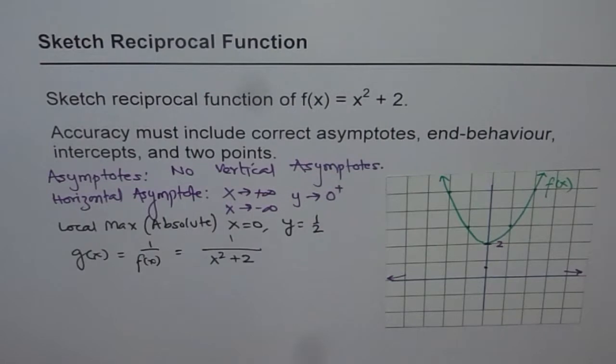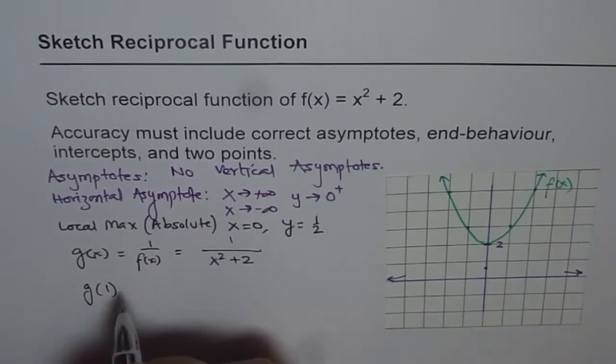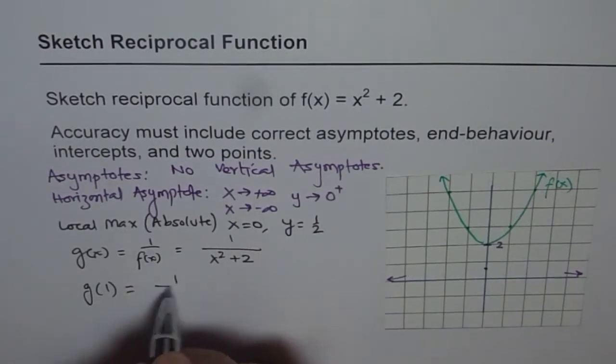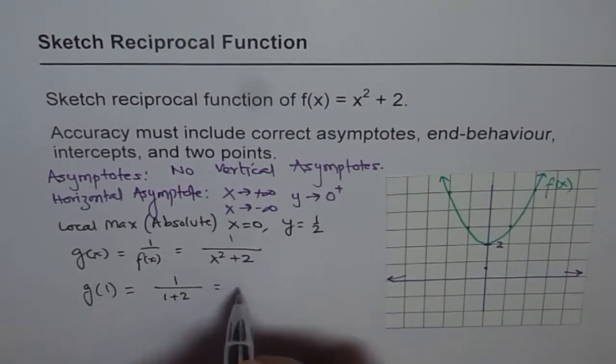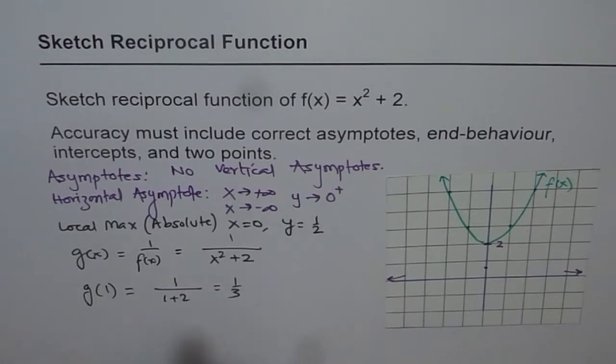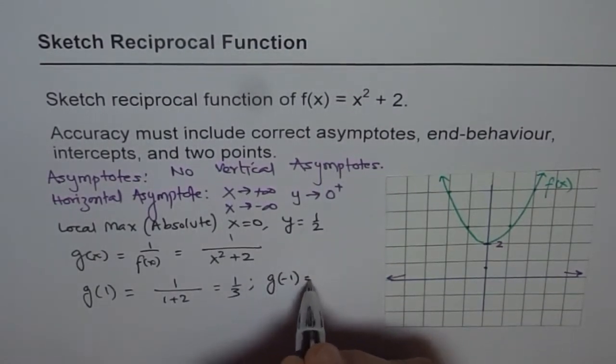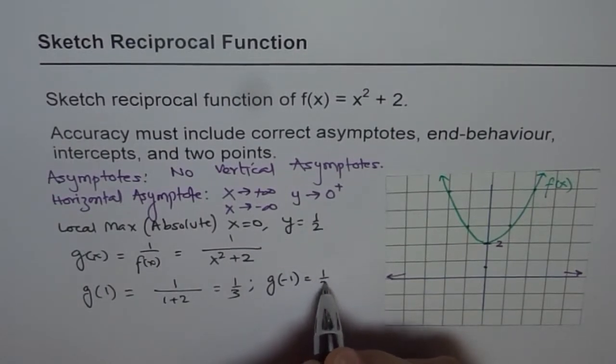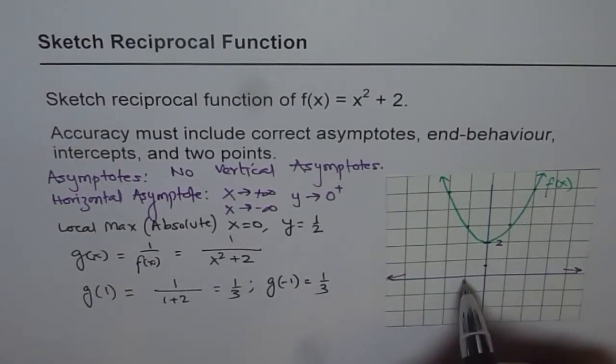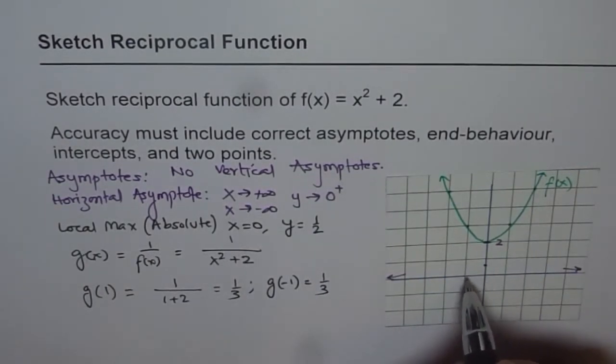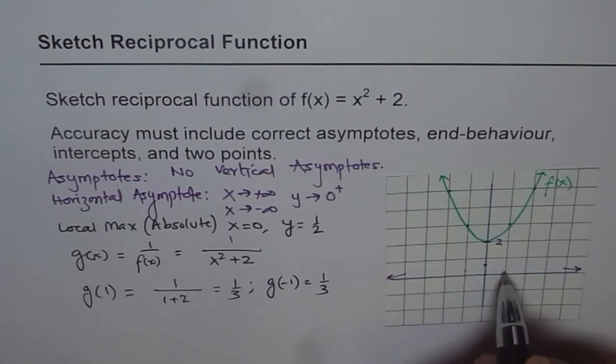Now if you substitute the value 1, so we get g(1) = 1/(1 + 2) = 1/3. And we know g(-1) will also be 1/3. So at 1 and -1, we get 1/3, so kind of like this. So this is very close.